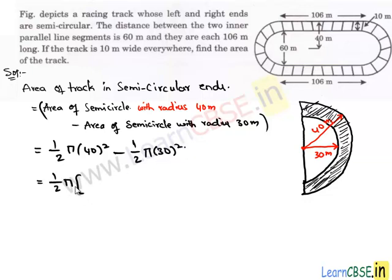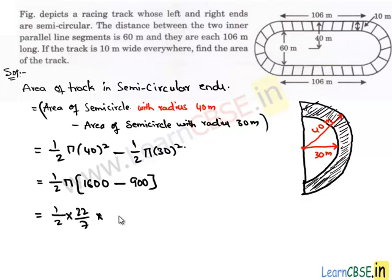Taking half of π as a common factor, we get 40 squared which is 1600, minus 30 squared which is 900. Substituting π as 22/7, we have half of 22/7 times the difference which is 700. In the numerator and denominator, 7 is a common factor — 7 goes into 700 one hundred times, and 2 goes into 22 eleven times. Therefore, the area A2 is 1100 square meters.